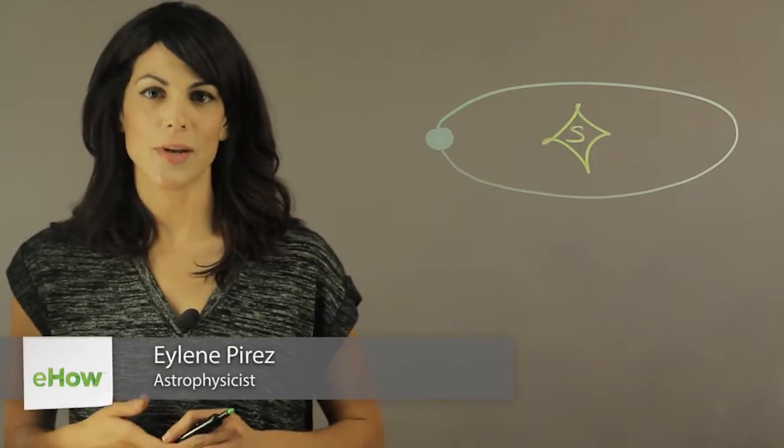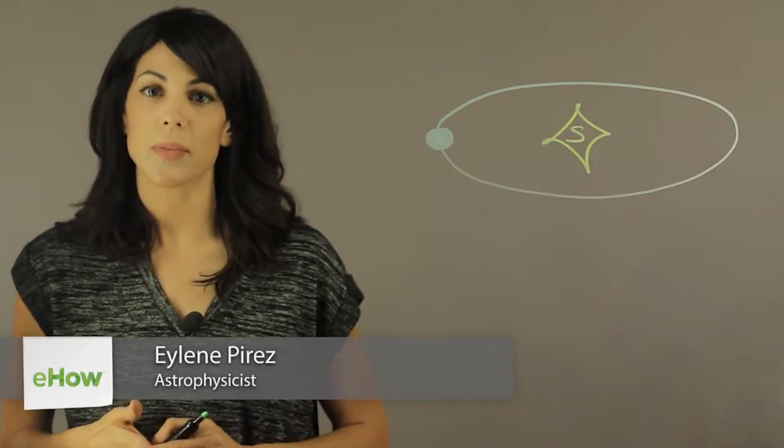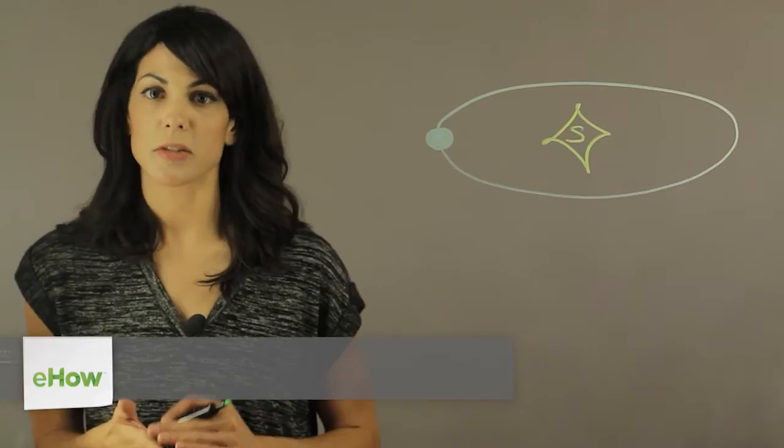Hi, my name is Aileen Perez. I'm an astrophysicist. This is what would happen if Earth's speed around the Sun doubled.